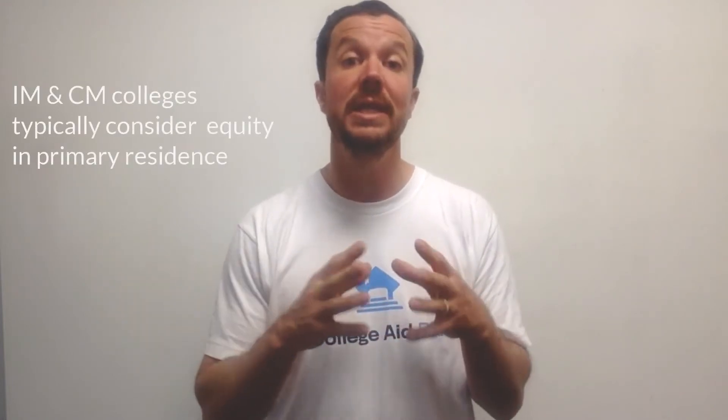One of the biggest differences between the federal methodology and the institutional and consensus methodologies is that the institutional and consensus methodologies will look at the equity in your primary residence and consider that an asset to varying degrees. Every school is a little bit different in terms of how much emphasis they put on home equity, but if you're a homeowner applying to schools that use these methodologies, it's probably going to be a factor in your financial aid eligibility.